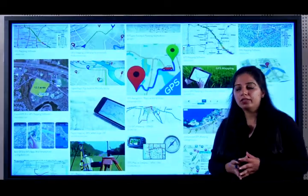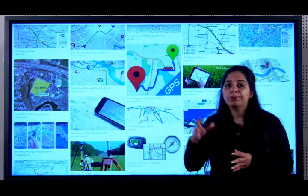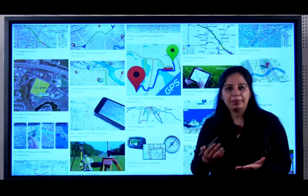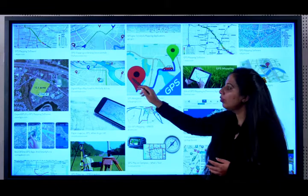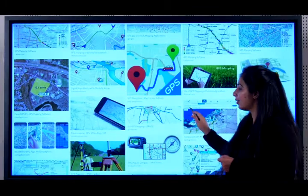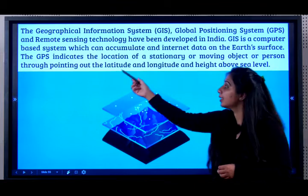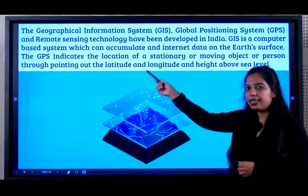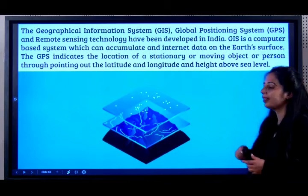What is GPS? Let's say you've come to Bengaluru for the first time and want to go from Vidhana Soudha to Mantri Mall but don't know the way. You can open the map on your phone — what it shows you is a GPS map. It gives you directions on how to go from one place to another. The GPS indicates the location of a stationary or moving object or person by pointing out the latitude, longitude, and height above sea level.